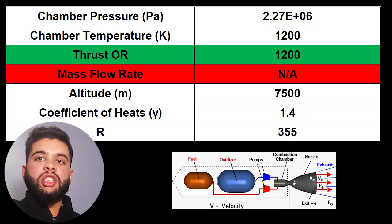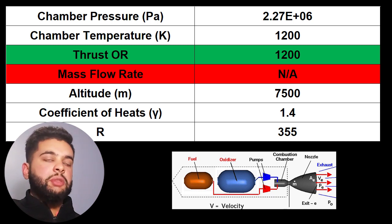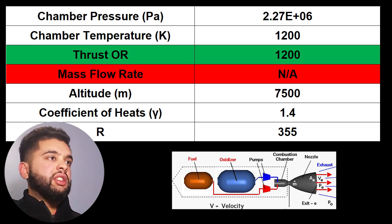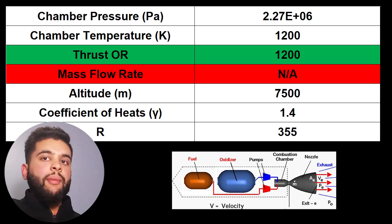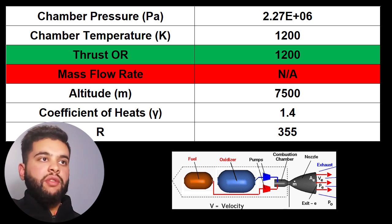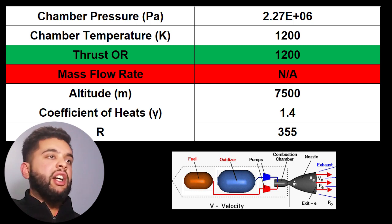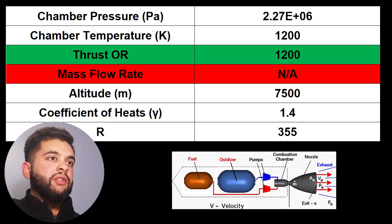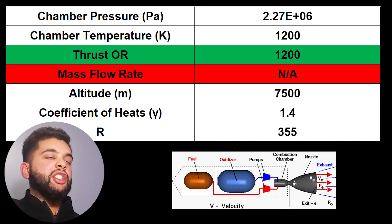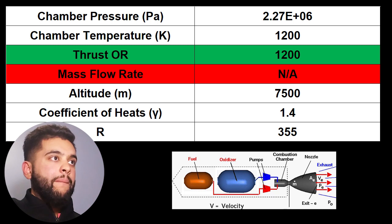The altitude is important because we want to find out at what point we want to optimize the nozzle performance. Keep in mind that the nozzle expansion is based on your external pressure, as explained in my video on how a rocket engine works. In this example we are choosing 7.5 kilometers, based on your mission parameters. The coefficient of heats is your gamma — for air it's 1.4, which is Cp over Cv. Your R is your gas constant, 355 kJ/(kg·K). You can input either force or mass flow rate.